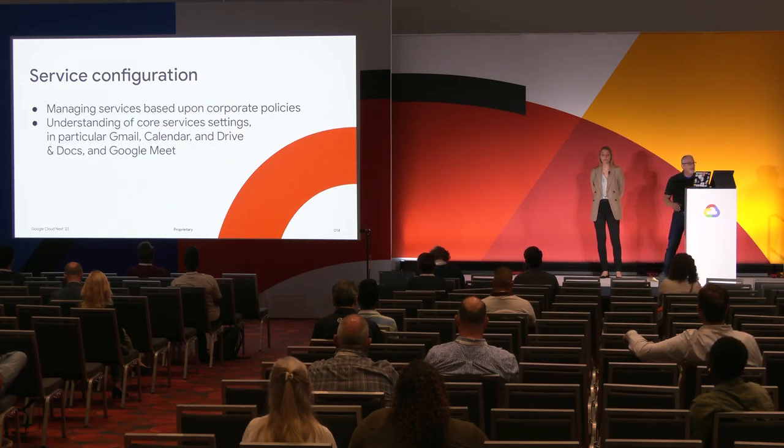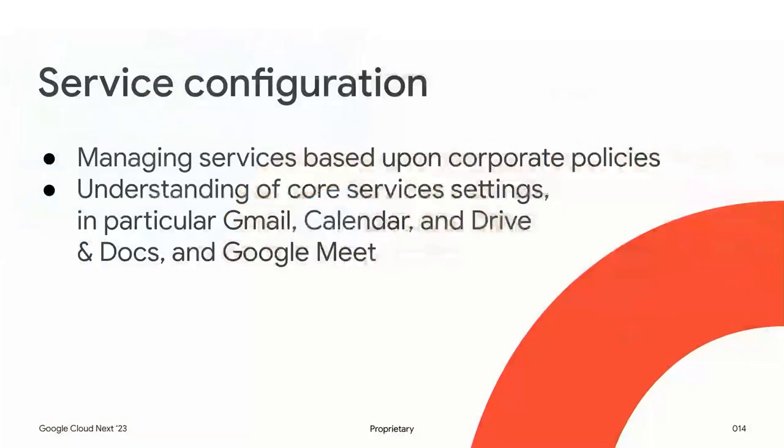The second of the five areas of assessment is managing services. Services include the core services like Gmail and Calendar, as well as additional services you may want to enable. For example, you may have contractors and not want them to have access to all Google services, while everyone else in your company does. So setting up policies around services is important.